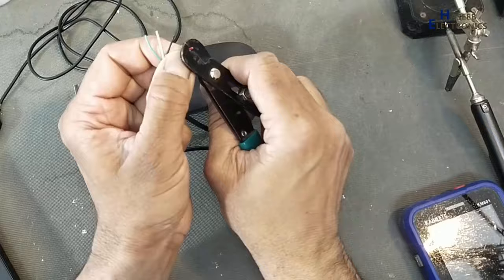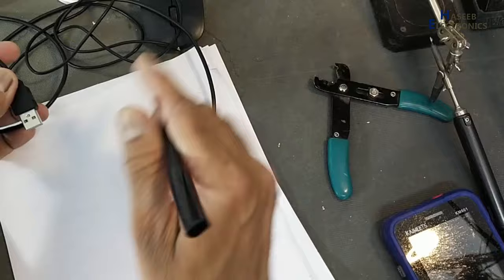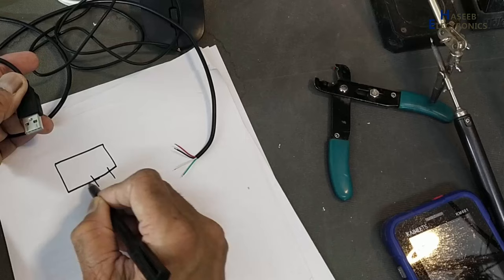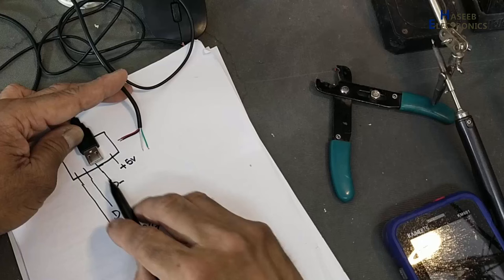If we place this connector in this way that its contacts are in upside: one, two, three, four. The first connector here is five volt positive voltage. Then the second wire closer to five volt is D negative, data negative. Then D positive and common.